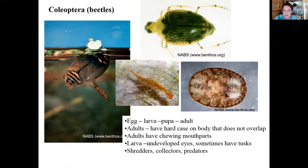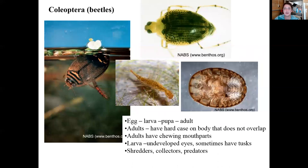Next are Coleoptera, the beetles. Adults often have a very hard case and their wings don't overlap — that's a key way to distinguish beetles from true bugs. If wings overlap it's likely a Hemipteran true bug; if they don't overlap it's likely a beetle. Mouthparts also differ: Hemipterans always have that beak, while beetles generally have chewing mouthparts that aren't as prominent. There is also very diverse ecology within aquatic beetles.